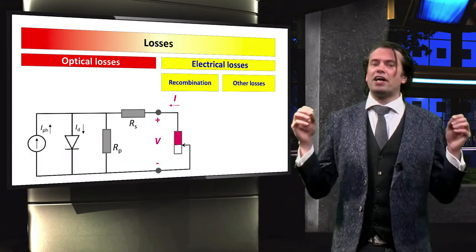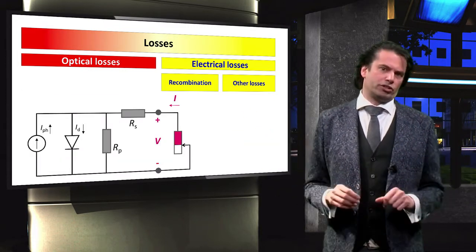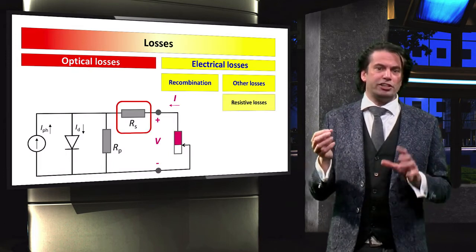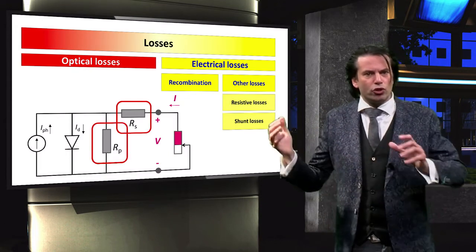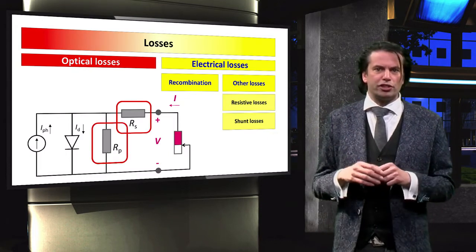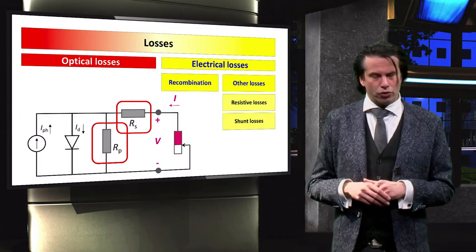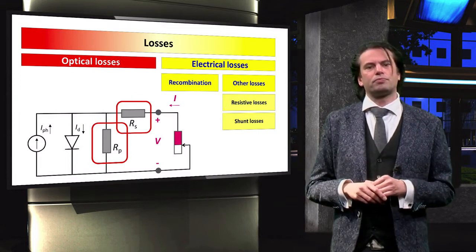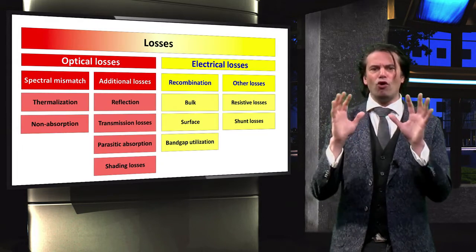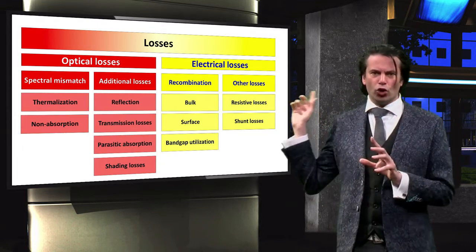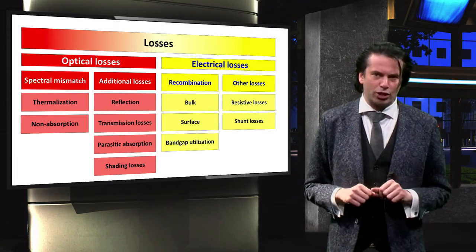Finally, there are other electrical losses. These involve the resistive losses and the shunt losses discussed in the video on the equivalent circuit of the solar cell. This is what the full overview of losses in any type of solar cell looks like.